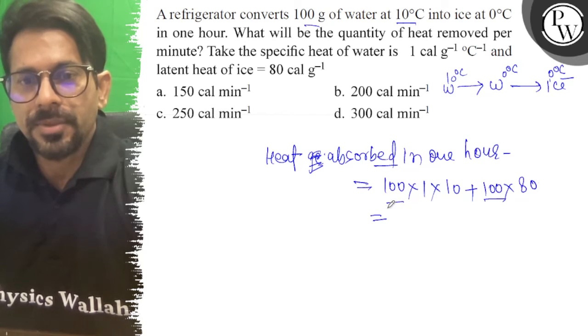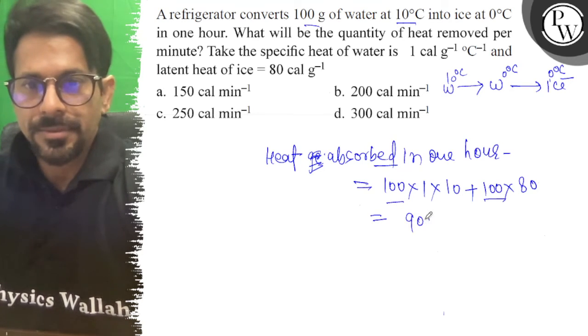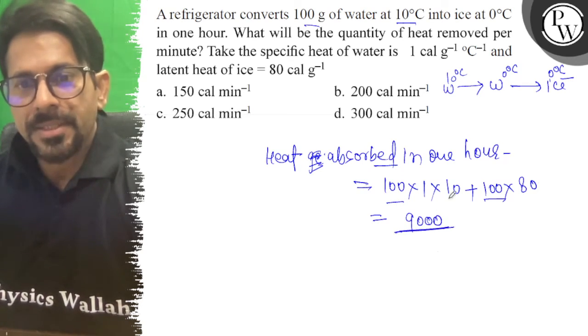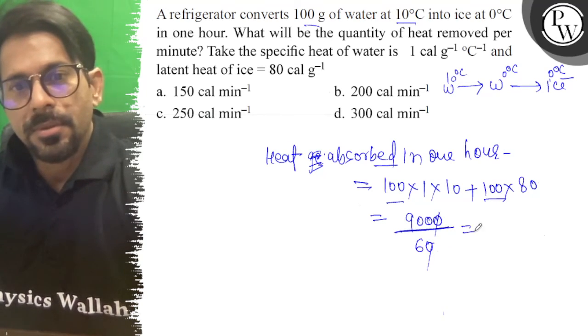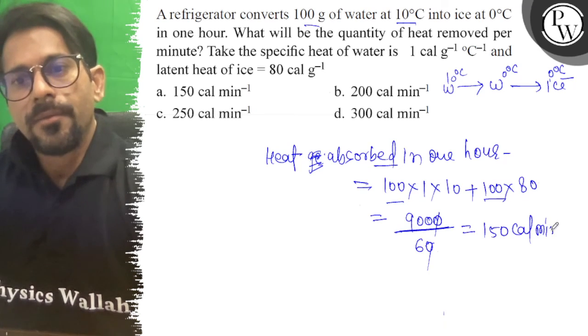1000 plus 8000 is 9000 divided by 1 hour. So divided by 60 minutes. So you have 150 calorie per minute. It is absorbed.